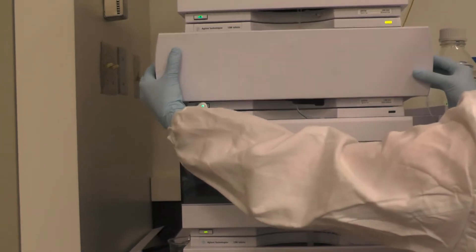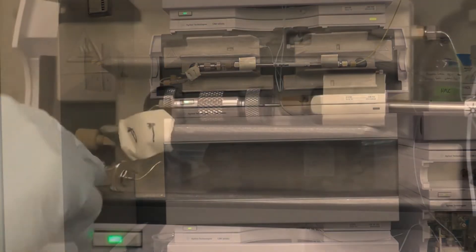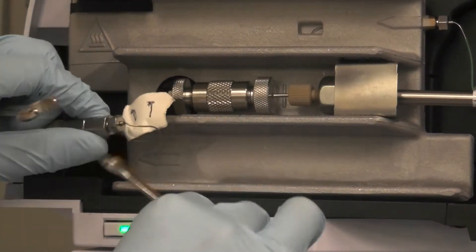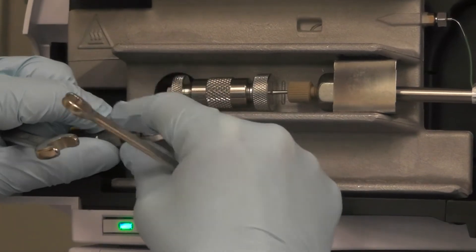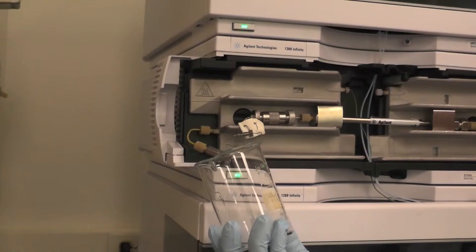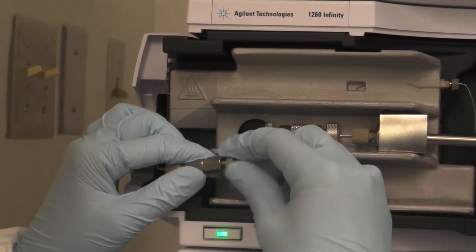Open the column compartment to ensure that an appropriate column has been installed. Detach the left column holder and allow the system to purge for a couple minutes in order to get rid of any bubbles and or leftover liquid from previous uses. Collect the liquid into a waste container. Reconnect the column holder.